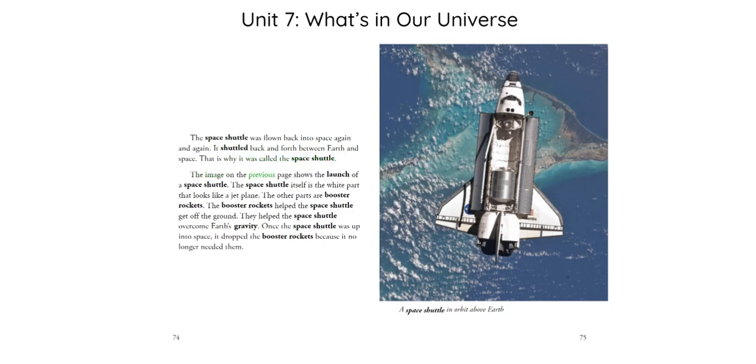The image on the previous page shows the launch of a Space Shuttle. The Space Shuttle itself is the white part that looks like a jet plane. The other parts are booster rockets. The booster rockets helped the Space Shuttle get off the ground. They helped the Space Shuttle overcome Earth's gravity. Once the Space Shuttle was up into space, it dropped the booster rockets because it no longer needed them.